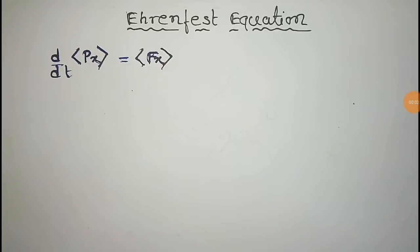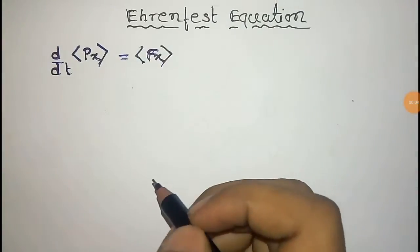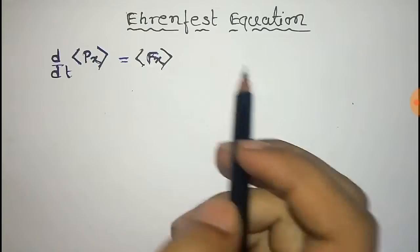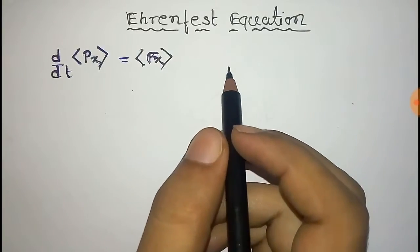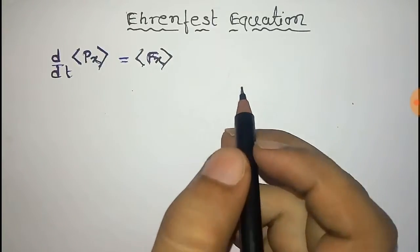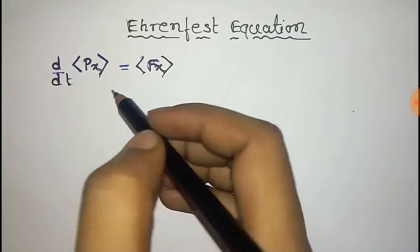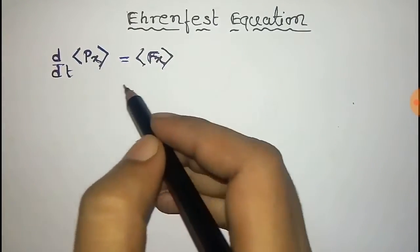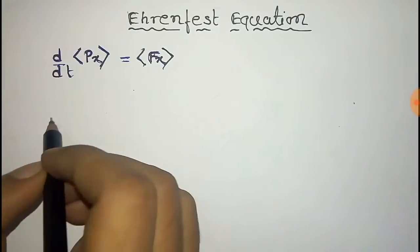In our first video we derived the first Ehrenfest equation, and the link is given in the description. In this video we derive the second Ehrenfest equation, that is: the time derivative of the expectation value of linear momentum is equal to the average value of force.